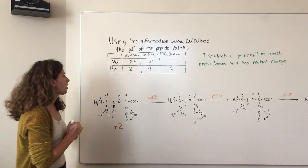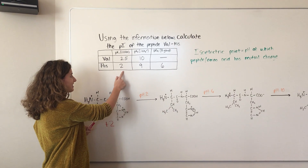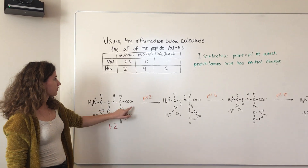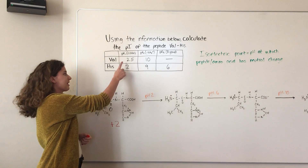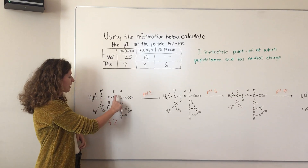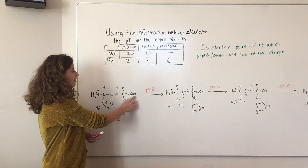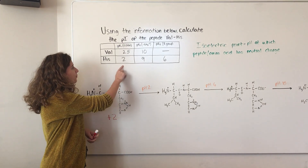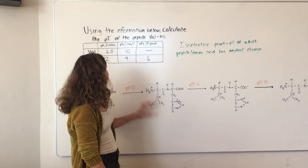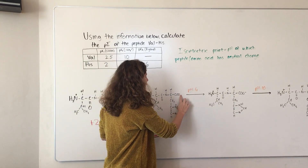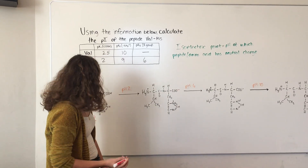Next, we draw it above a pH of 2, because histidine has a pKa of 2 for its carboxyl group. We use this first, lowest pKa for histidine rather than valine because the valine carboxyl group is inside the peptide bond and is not going to be deprotonated. Since the histidine carboxyl group is on the end, that's the one we use. Above a pH of 2, the carboxyl group is deprotonated and takes on a negative charge, so this peptide now has a charge of +1.